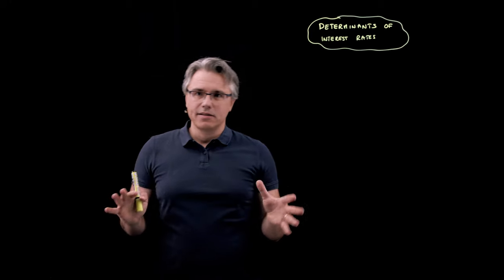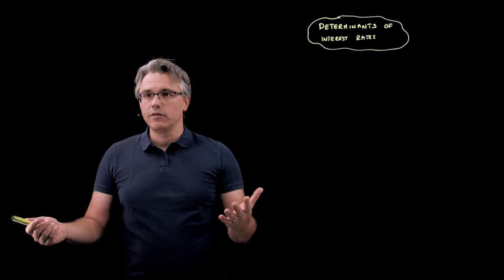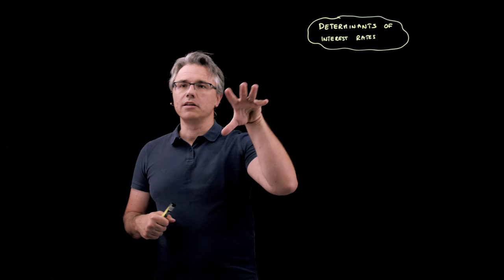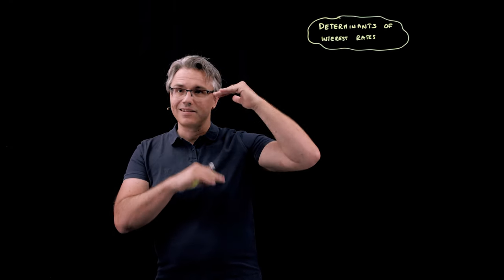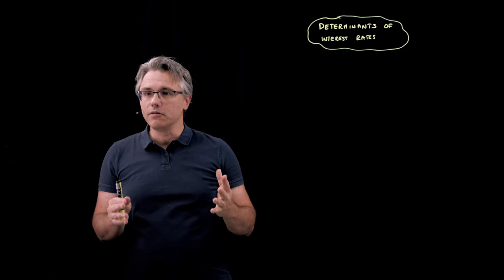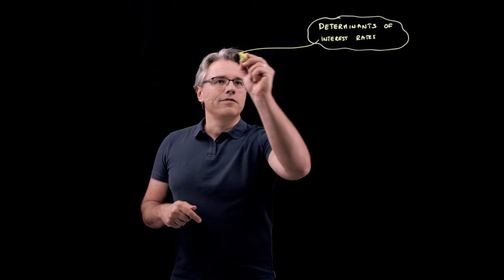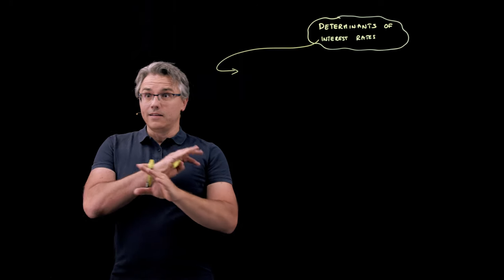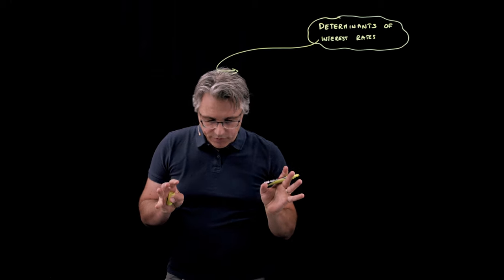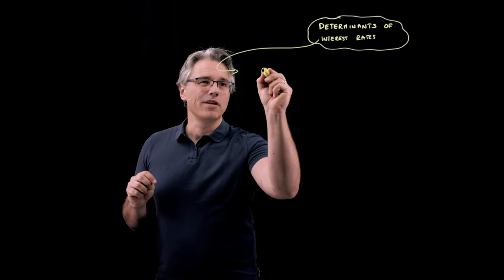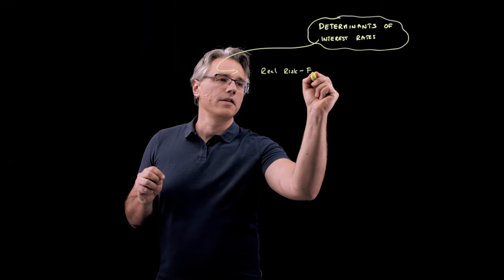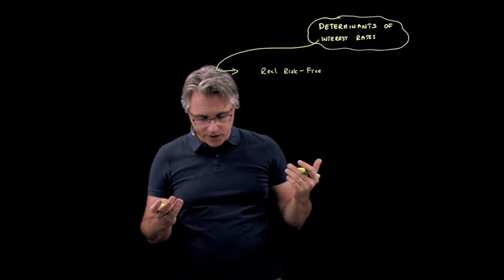We just saw a couple of interpretations of what an interest rate may be viewed as: the opportunity cost, the required rate of return, or a discount rate. Irrespective of which interpretation we choose to follow, the fundamental thing is: what is the level of the interest rate? I want to focus on the building blocks that determine the size or the level of interest rates — how high or low they are.